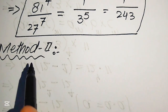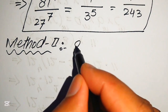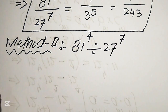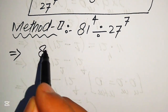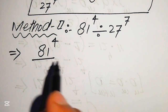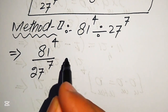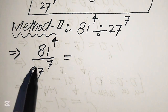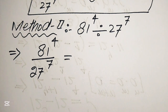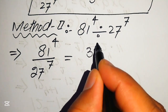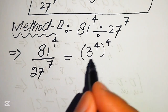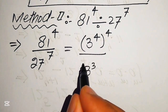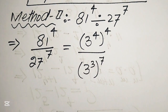For the second method, we again start with 81 to the power of 4 divided by 27 to the power of 7. Here we focus on the bases: we write 81 as 3 to the power of 4, with whole exponent 4, divided by 27 written as 3 cubed, with whole exponent 7.